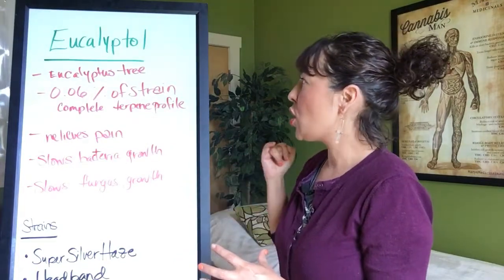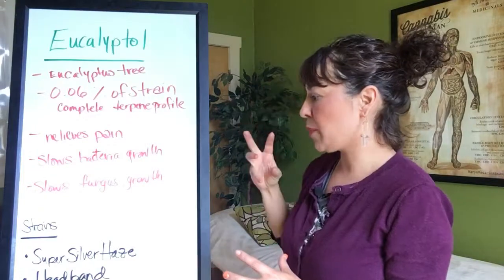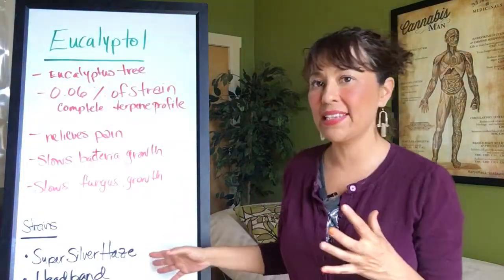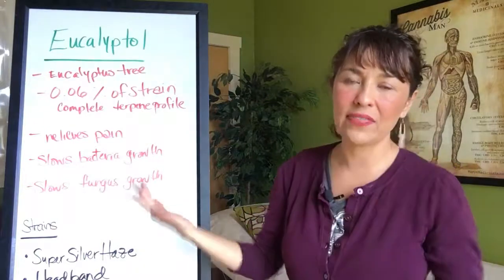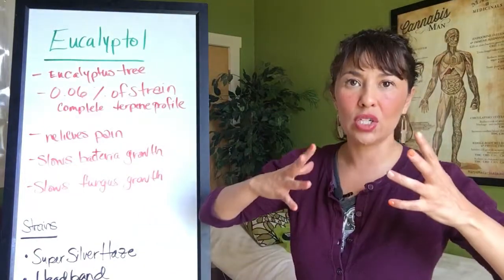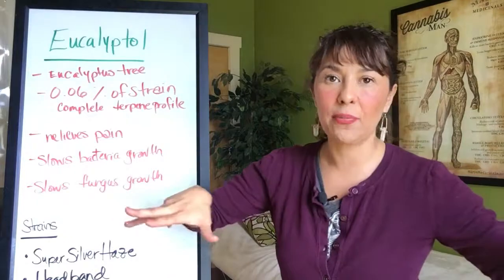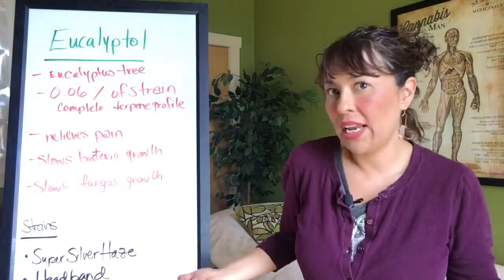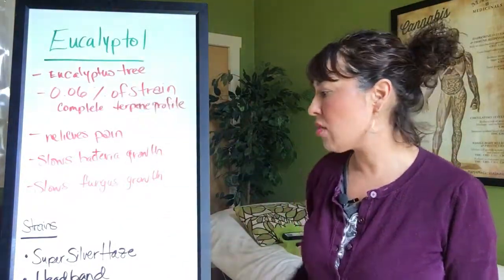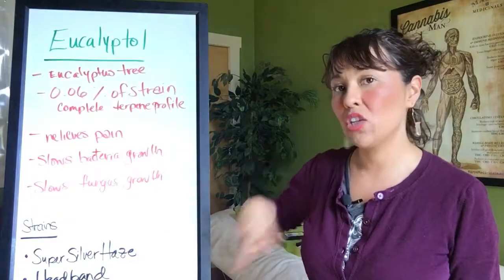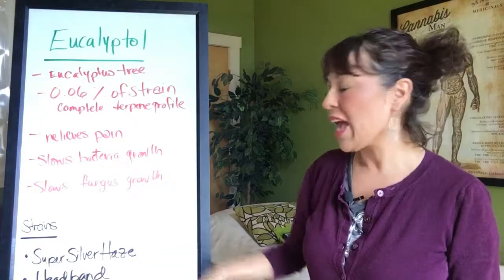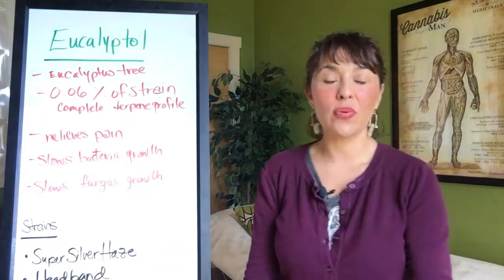This particular terpene is found in a couple of different strains, some that are well known. Once we start to boutique down and hybrid out, we're going to find this terpene all over the place — even though it's only in a very small amount. You're going to find it specifically in Super Silver Haze, which I really like a lot, and also Headband, also a great strain.